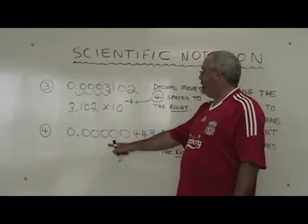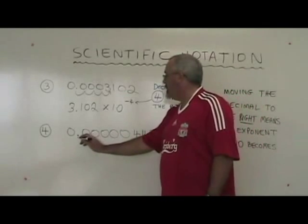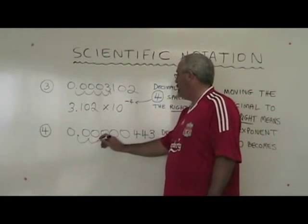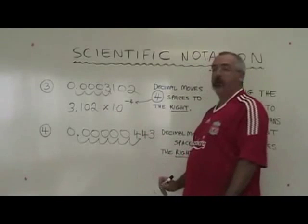In example four, I'm doing the same thing. Working with a very small number, I have to move my decimal one, two, three, four, five, six spaces to the right.